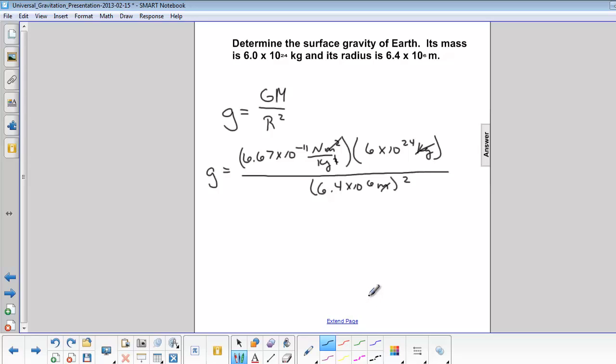Let's take care of the number part of our answer. We'll split up our numbers: 6.67 times 6 divided by 6.4 squared. And then the exponents: 10 to the negative 11th, 10 to the 24th, 10 to the 6th squared. So 10 to the 6th squared is really 10 to the 12th.